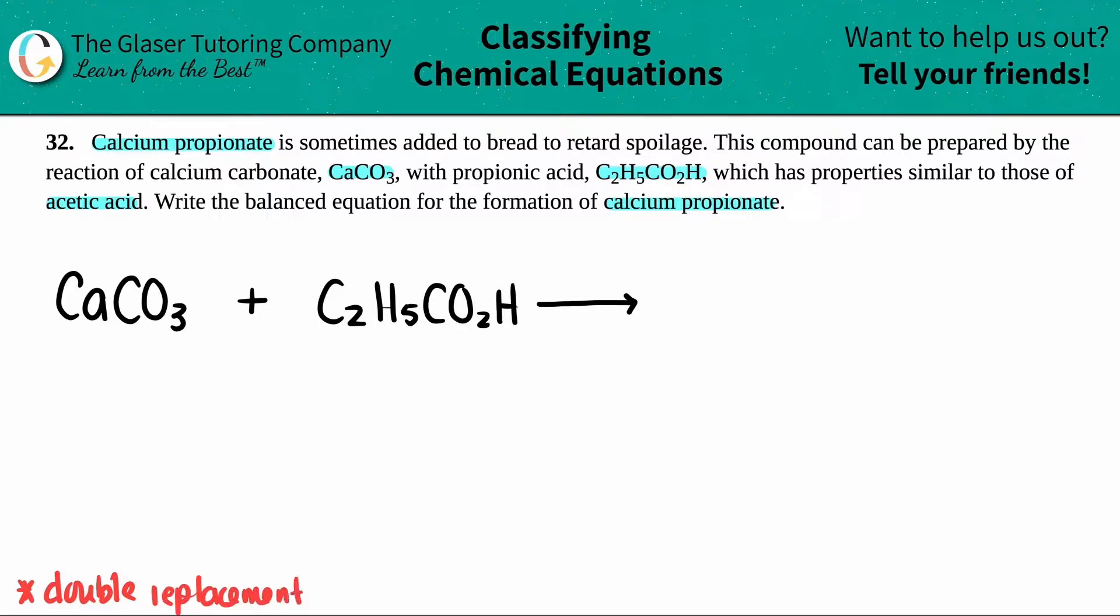This is just a double displacement or a double replacement reaction. This just means that we're going to be swapping them. The outer ions go with the outers, and the inner ion goes with the inner ion. So we basically just have to figure out what the two ions were here and mix them up, and that way we'll get the two products.